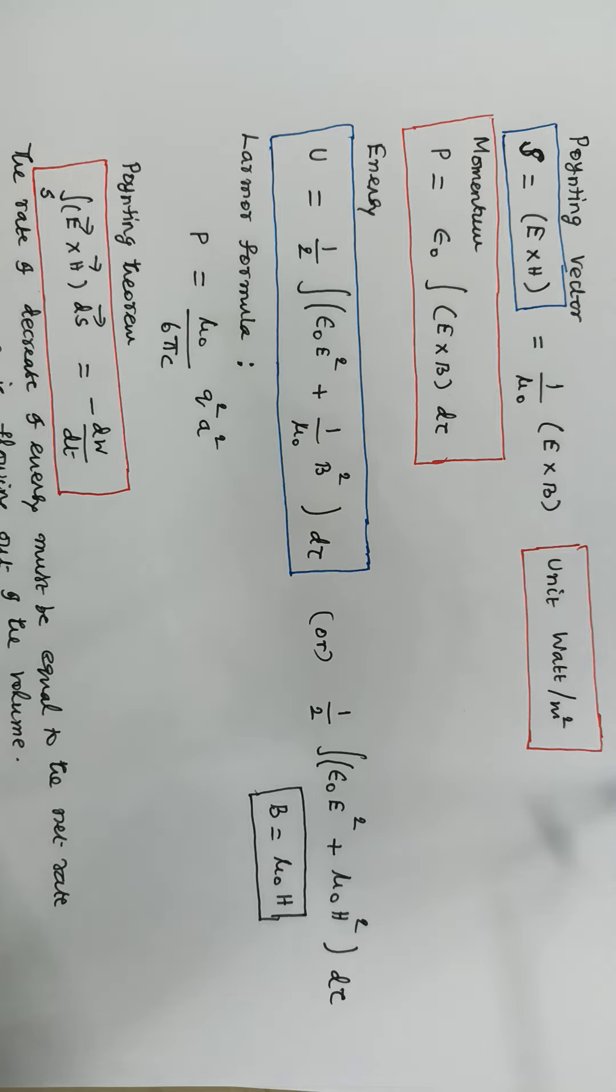As you know that B equals μ0 into H. Then U is expressed as 1 by 2 integral ε0 E square plus μ0 H square into dτ. This is another form.